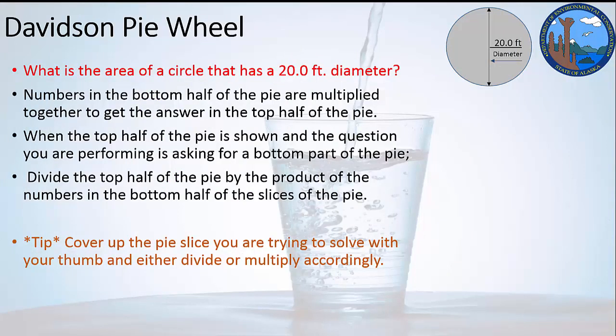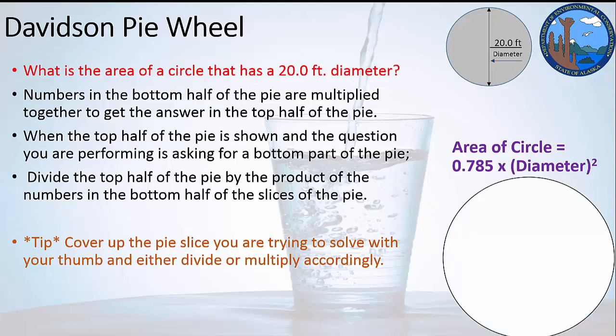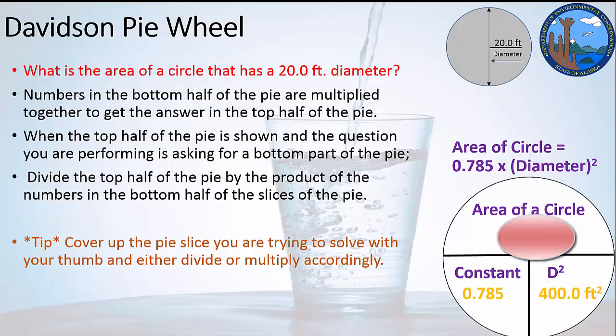This next example is going to be what is an area of a circle that has a 20 feet diameter. Again, we're going to look at the Davidson pie wheel. We might have to bump over to look at our formula worksheets to get the formula, if that's the direction you want to go. But what we're going to work with specifically in this video presentation is the Davidson pie wheel. And so from the area of the circle, we're going to stick that on one side of the equal sign on the top. We're going to stick the constant and the diameter squared on the bottom.